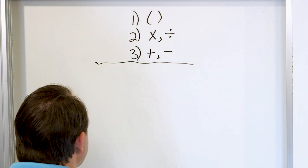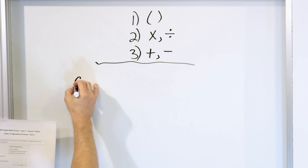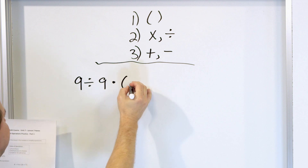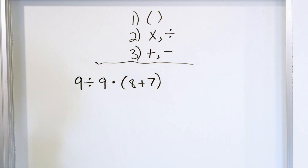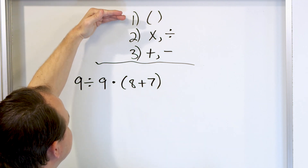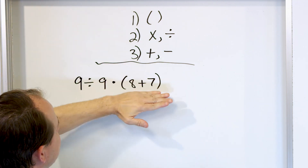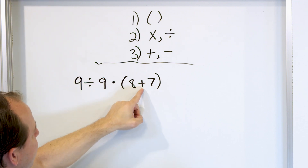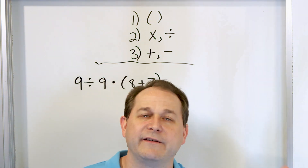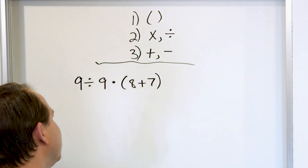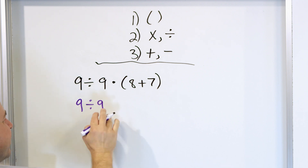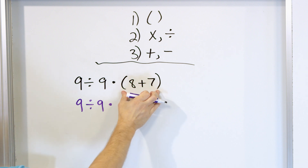So how do we conquer the following problem? Take a look at 9 divided by 9 times parentheses 8 plus 7. What do we do? Well, we do the same thing we always do. We go to the first step and we look at priority number one: parentheses. We must do what's inside of here first. I know that there's a plus here and plus is the last priority, but because it's inside of parentheses, we have to do it first. So the 9 and the division by 9 — that all comes later.